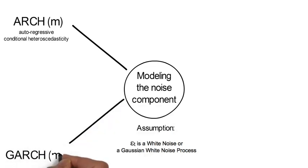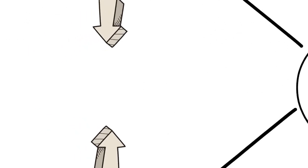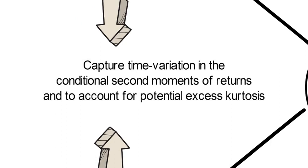We also generalize that to GARCH models, the so-called generalized ARCH models. Both of these approaches allow us to capture time variation in the conditional second moments of returns and to account for potential excess kurtosis, which we also call fat tails.